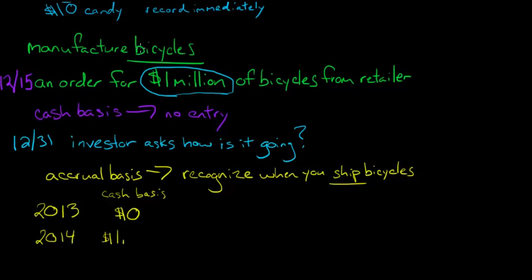And then all of a sudden in 2014, if your investor hasn't gotten scared and pulled out the money by then, then you're going to have a million dollars in sales. Maybe you never even get to that point. But under the accrual basis, when you ship those bicycles, you go ahead and you recognize that one million.